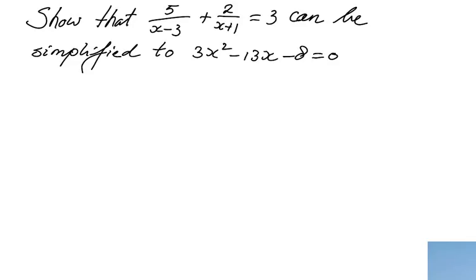Welcome to this video about algebra fractions. We have to show that this particular equation — 5 over x minus 3, plus 2 over x plus 1, equals 3 — can be simplified to the quadratic equation 3x squared minus 13x minus 8 equals 0. This equation equals that equation, but we have to show the steps to go from here to there.